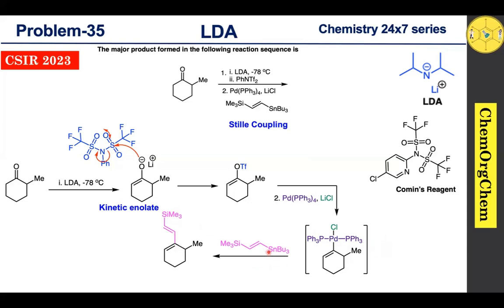You should note the stereochemistry of this alkene geometry. The alkene geometry stereochemistry is trans, and this is never changed after the Stille cross-coupling reaction.